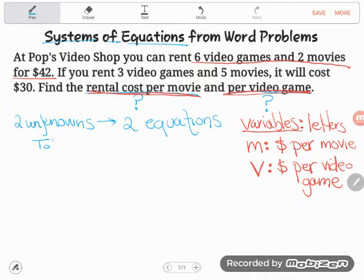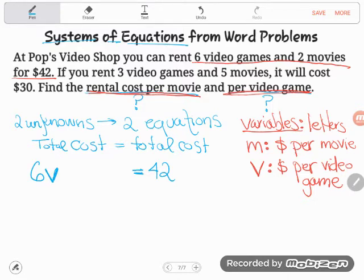So remember what I said. I said there's two ways to talk about this total cost. One way is just to tell you what the total cost is. So they told us that if you go to Pop's Video Shop and you rent six video games and two movies, it's going to cost you $42. But another way is to talk about how I would find that total cost. Well, you'd pay the video game cost, the cost per video game. We said we'd use V for that. You'd pay it six times if you were renting six video games. Six V's, six times V. And you would pay the movie cost, that M movie cost, two times if you got two movies. See how it says six video games, six V's, and plus two movies, two M's. So six video games and two movies cost you $42. There's my first equation.